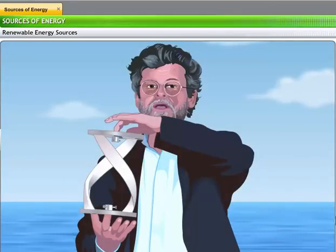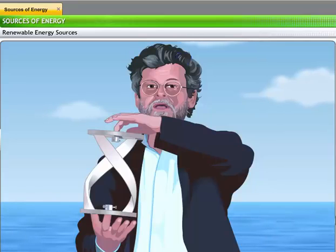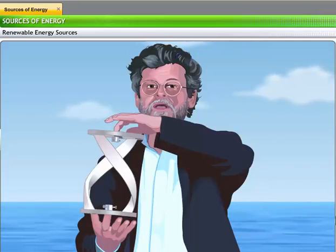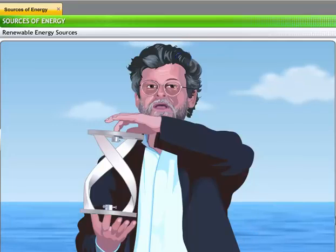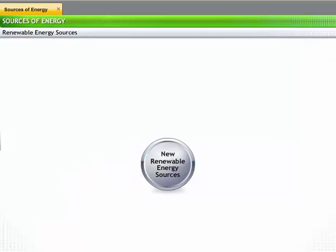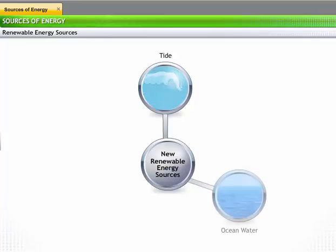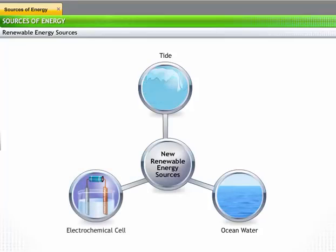Scientists are constantly researching new sources for renewable energy. Some types of source in the early stages of development are: tides moving in and out of seashores for tidal energy, ocean water having different temperatures at shallow and deep levels for ocean thermal energy, and fuel cells that electrochemically generate energy from chemical reaction of fuels and oxidants.